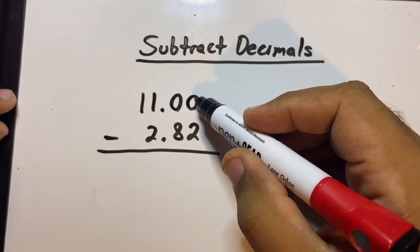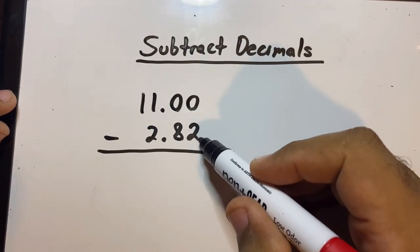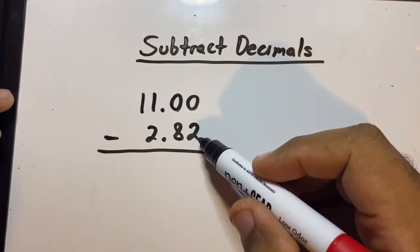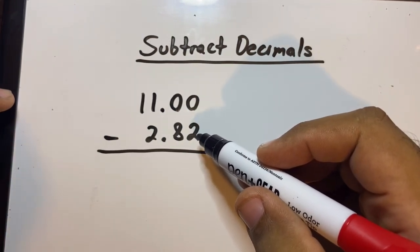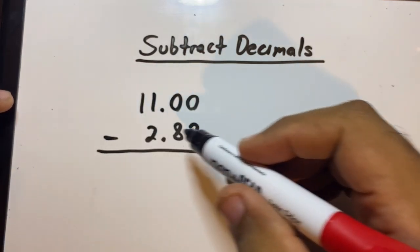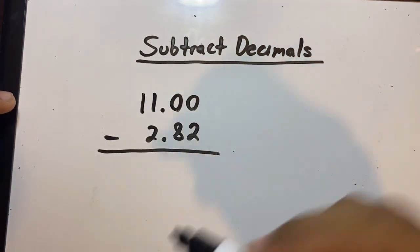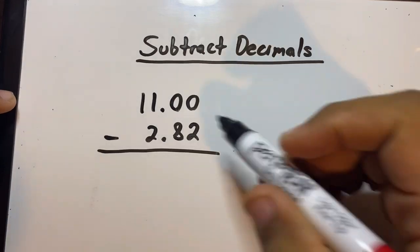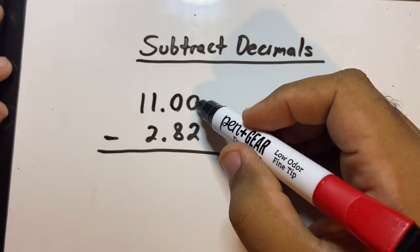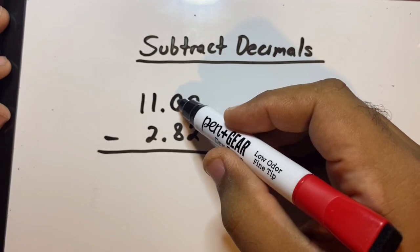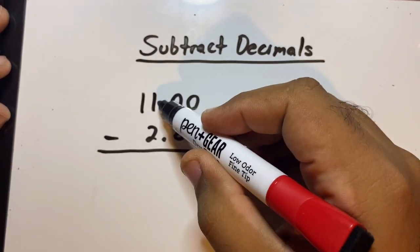You cannot do low numbers minus high numbers. You can't do that. It's going to give you a very strange question. 0 minus 2 is not 2, you can't do that. No, no, no, you have to regroup. So this 0 has to borrow from the 0, but there's nothing here, so now this 0 has to borrow from this 1.